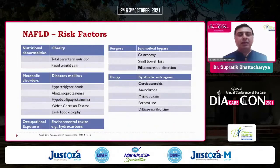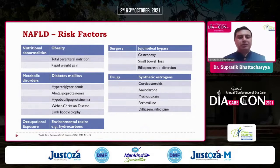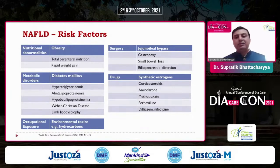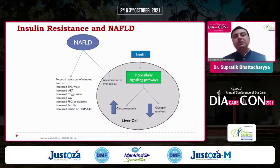The risk factors for NAFLD are nutritional abnormalities like obesity, metabolic disorders like diabetes, environmental toxins, surgery, and drugs. Insulin resistance through intracellular signaling pathways leads to gluconeogenesis and decreased glycogen synthesis. NAFLD can cause accumulation of liver fat, and indicators include elevated BMI, waist circumference, increased ALT, triglycerides, and increase in HOMA-IR.